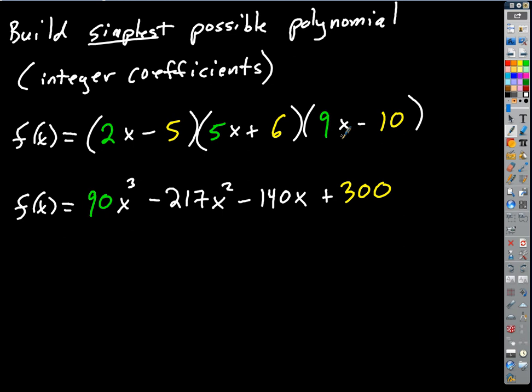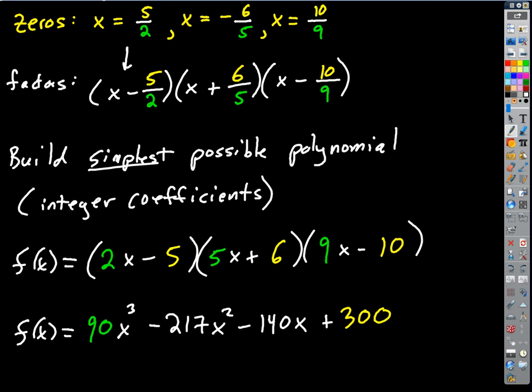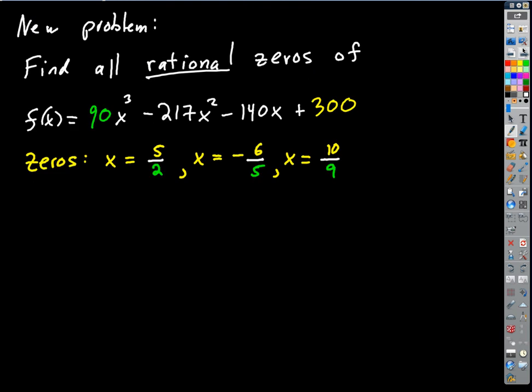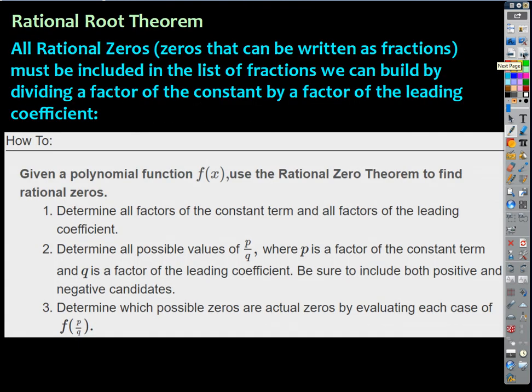The first term is the product of 2x times 5x times 9x: 2 times 5 is 10, times 9 is 90, so the leading term is 90x cubed. The constant is the product of negative 5, positive 6, and negative 10, which gives positive 300. So the leading coefficient came from the product of all the denominators of the fractional zeros, and the constant came from the product of all the numerators.